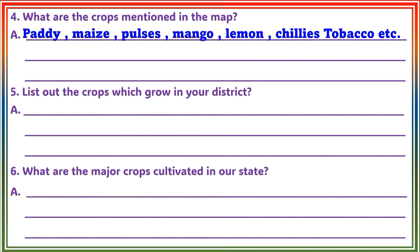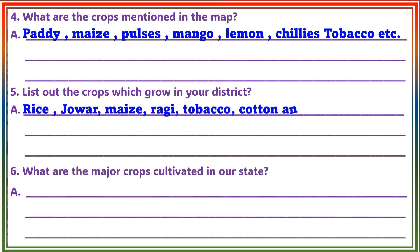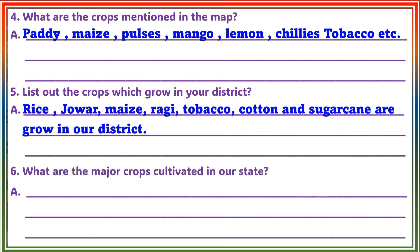Question 5: List out the crops which grow in your district. Answer: Rice, Jowar, Maj, Raji, Tobacco, Cotton, and Sugarcane are grown in our district.